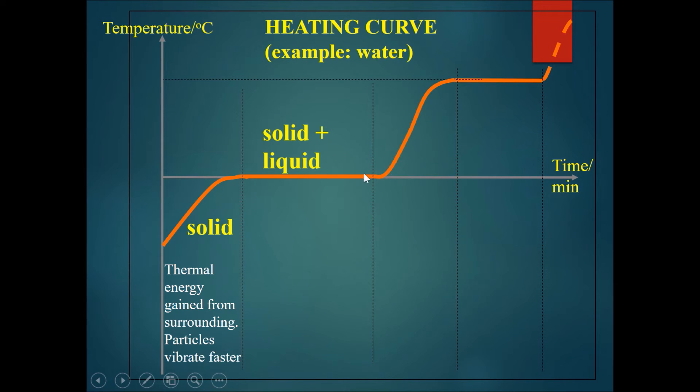So anywhere along this line would be a mixture between solids and liquids, a mixture between water and ice. Over here they will all still be ice at exactly zero degrees. And then in the middle it may be part solid ice and part liquid water. And at this point over here where it ends it will be 100% water at zero degrees celsius.